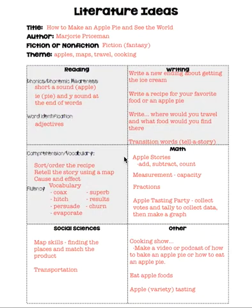Also in the reading area we have word identification. A type of word that is very frequent in this book is adjectives — describing words. You could look at the adjectives in the story and also emphasize the noun that the adjective is describing.